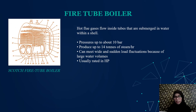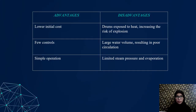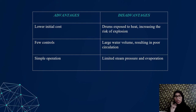This is a fire tube boiler diagram. Fire tube boilers are available in sizes ranging from 500,000 to 75 million BTU input. Advantages include lower installation cost, easy control, and simplified operation. Disadvantages include high risk of explosion, large water volume resulting in poor circulation pressure, and limited steam pressure and vaporization.